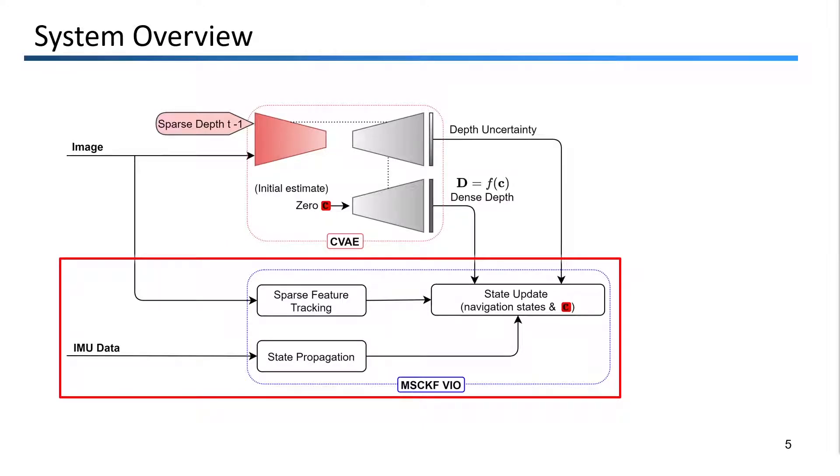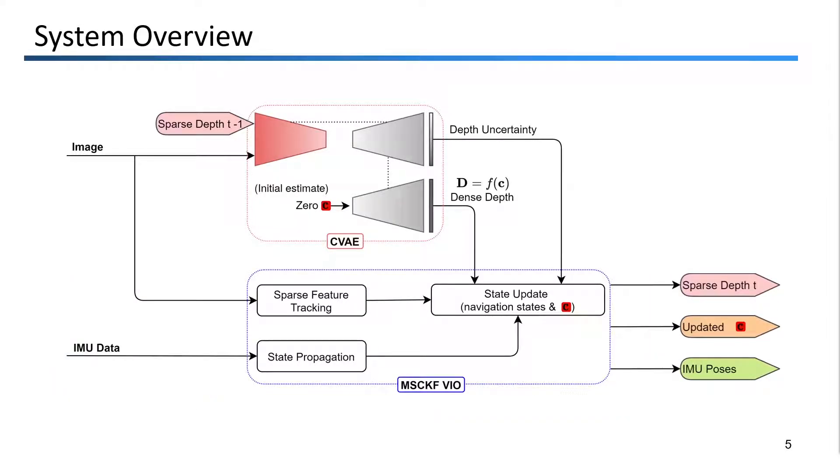After propagating the VIO system forward to the current time using the IMU data, we use sparse feature tracks from the images to provide the only other necessary information to perform our state update. At this point, we can retrieve a new sparse depth map, updated code, and accurate IMU poses from the estimator. The updated code, which is the current best estimate, is then decoded in the CVAE network to obtain a more accurate dense depth map.